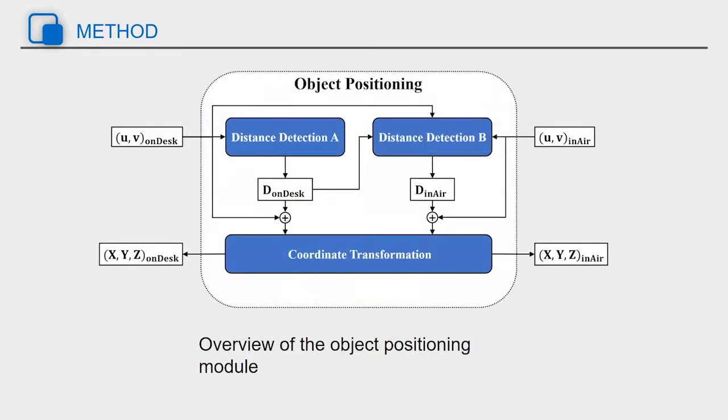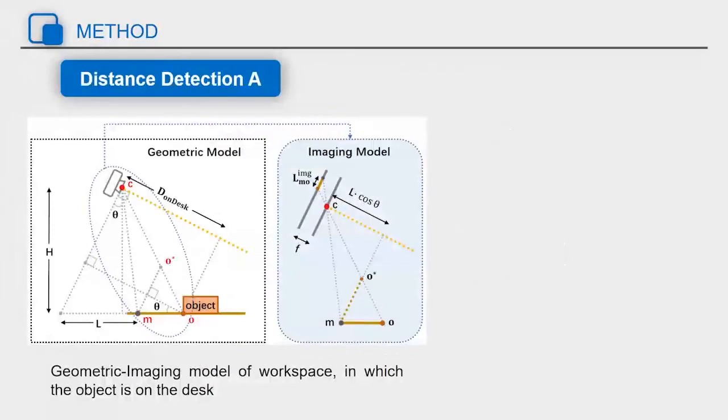Here is the overview of the object positioning module. Distance detection A is used to decide the distance of the object on the desk. To be specific, we abstract the side view of the workspace as a geometric imaging model. For light segment MO, the optical imaging equation can be established.